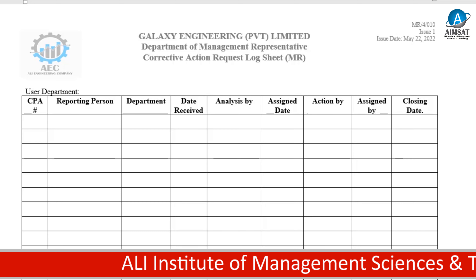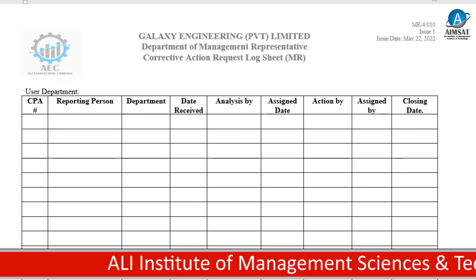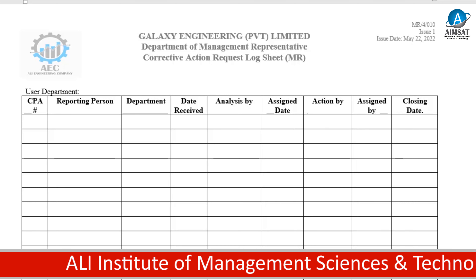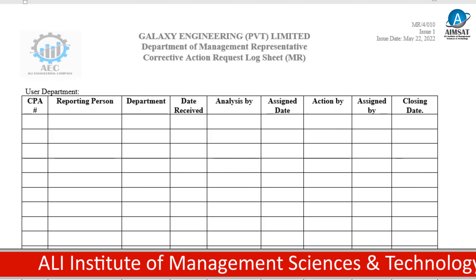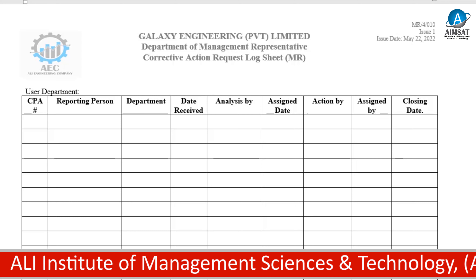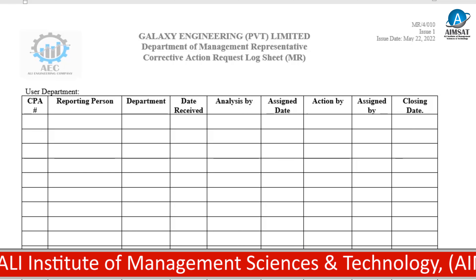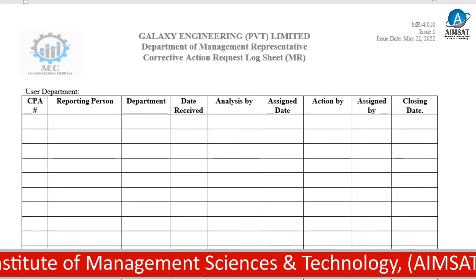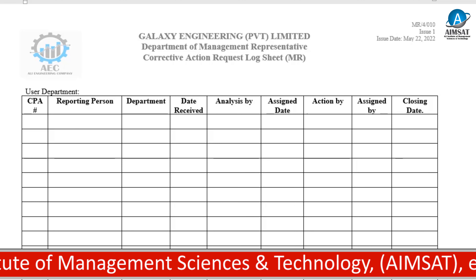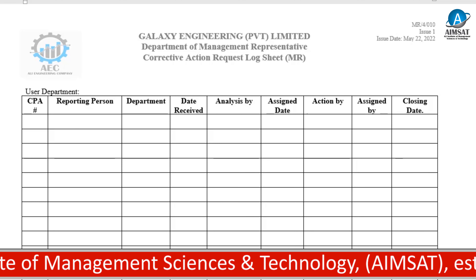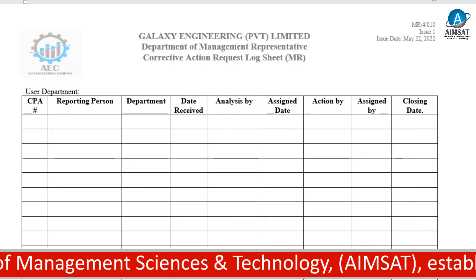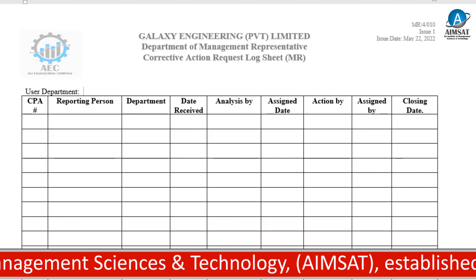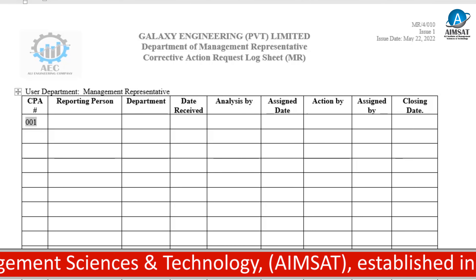The same corrective action request log sheet can be used or referred to by the department who raised the corrective action request. For departmental internal records, the department head may also maintain a corrective action request log sheet and will write the department name in brackets, while the format of the document remains unchanged.